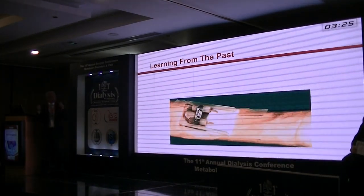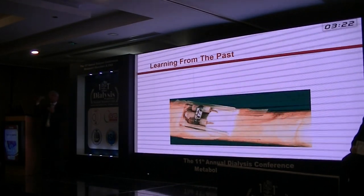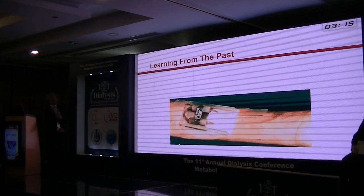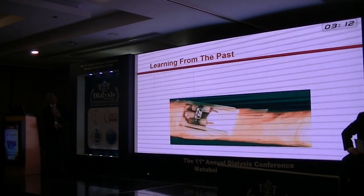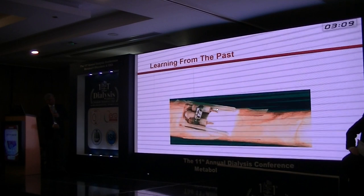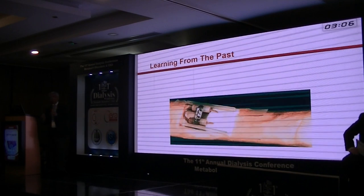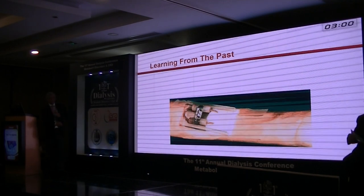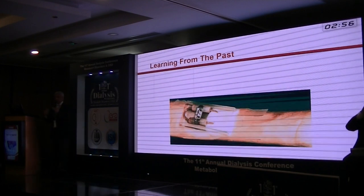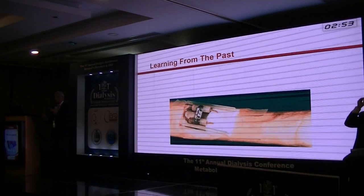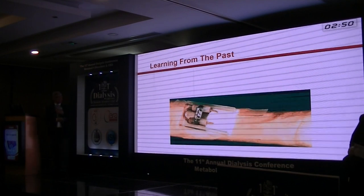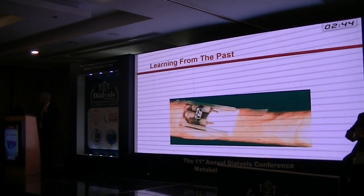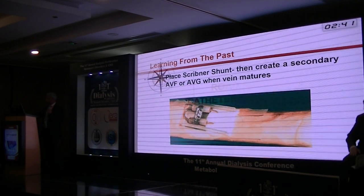One thought: learn from the past. In earlier years, the Scribner shunt was used externally, but importantly it was maturing the vein. Some practitioners in countries like India placed a Scribner shunt when starting someone on dialysis, and when the vein matured, they created a fistula — which did not take very long. You could potentially learn from that concept, though the Scribner shunt is no longer commercially available, so don't try that at home.